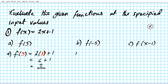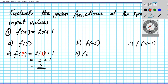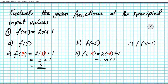Now let's take a look at the b part, f of negative five. The procedure here is similar to the a part — we are just going to substitute negative five for x in the function. So we have two times negative five plus one. Two times negative five is negative ten; negative ten plus one is negative nine. That's your output value for part b.